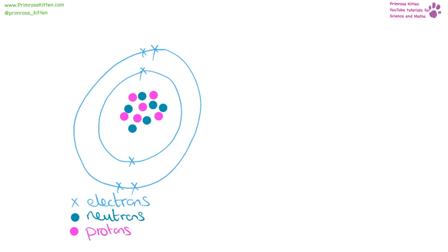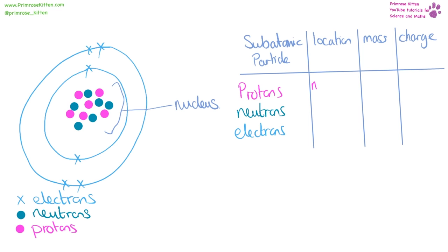Here we have the structure of an atom. We have electrons that are on the shells around the outside, protons that are in the middle, and neutrons that are in the middle. This bit in the middle is collectively called the nucleus. Protons are in the nucleus — they have a mass of one and a charge of plus one. Neutrons are also in the nucleus — they have a mass of one and a charge of zero. Electrons are in the outer shells — their mass is 1/2000 and they have a charge of minus one.